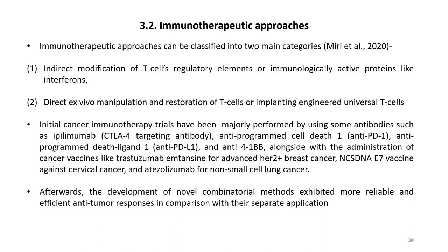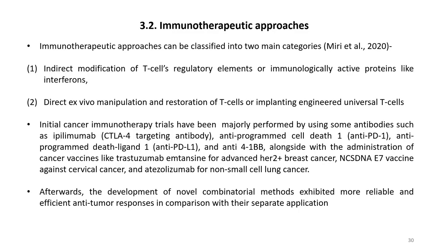Immunological-assisted cancer therapy remained controversial until 1965, when leukemia cell regression was reported following bone marrow transplantation in response to an adoptive immune cell response against tumor cells. The phrase 'adoptive immunotherapy' originated from that case; it was later elucidated that T cells accompanied by natural killer cells played the principal role. The various immunotherapeutic approaches can be classified into two main categories: indirect modification of T cell regulatory elements or immunologically active proteins like interferons, and direct ex vivo manipulation and restoration of T cells or implanting engineered universal T cells.